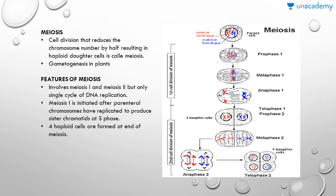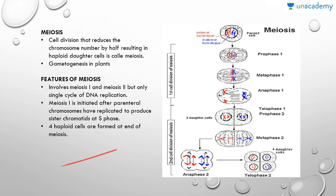Coming to meiosis — meiosis is cell division that reduces the chromosome number by half, resulting in haploid daughter cells. We are diploid individuals, but our ovum and sperm are haploid. Examples of meiosis include gametogenesis in plants. Meiosis involves meiosis I and meiosis II, but only a single cycle of DNA replication takes place.